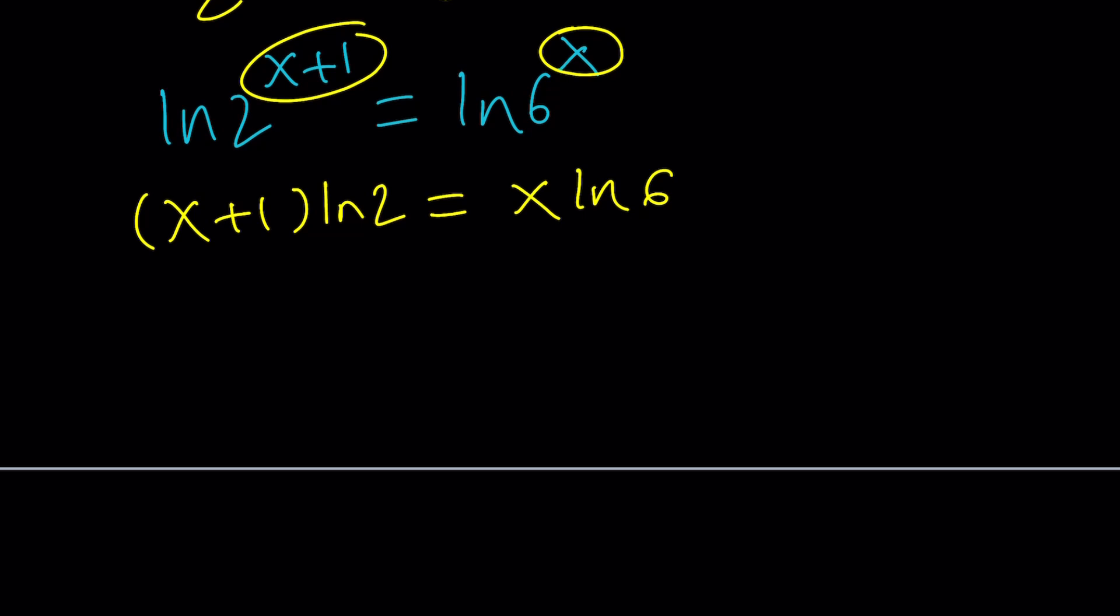You're going to get X plus 1 ln 2 equals X ln 6. And of course our goal is to solve for X. So let's go ahead and everything that contains X, let's put everything on the same side. And from here we're going to get X ln 2 plus ln 2 equals X ln 6. And then let's go ahead and subtract it.